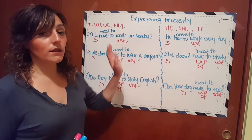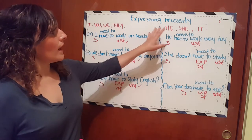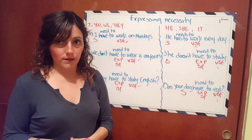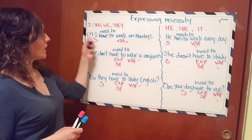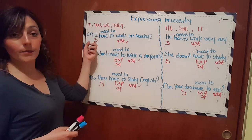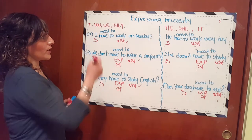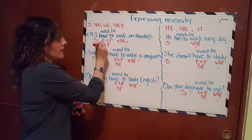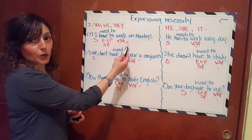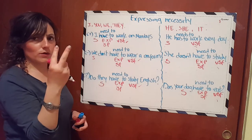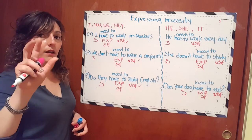We need to separate the subjects I, you, we, and they, because I'm going to teach them in simple present. The first idea is 'I have to work on Mondays' — it's an affirmative idea. The subject is 'I,' then we use 'have to' or 'need to' as expressions for necessity in simple present, and after that we use the verb in simple form: 'I need to work' or 'I have to work.' It is the same idea — you just have two options, whichever you feel comfortable with.